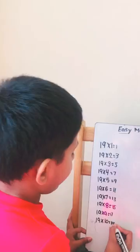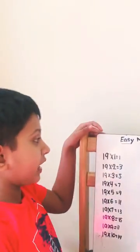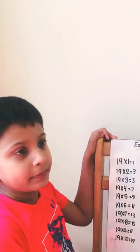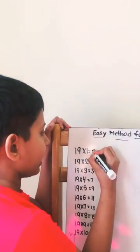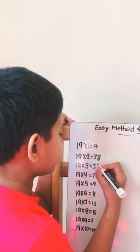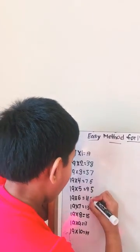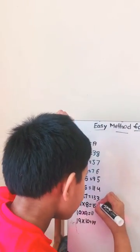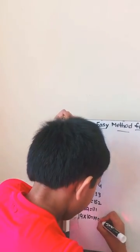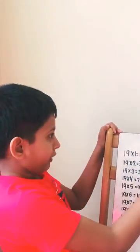Now you're supposed to write it backwards from nine. So nine, eight, seven, six, five, four, three, two, one, and zero. There, now you've got the 19 times table.